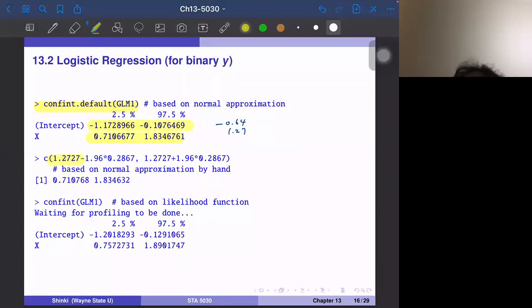To be exact, our estimate plus minus 1.96. This is the 2.5 percentile and 97.5 percentile of the normal distribution, which covers 95% of cases. If we multiply standard error of beta one hat, we get exactly the same answer.